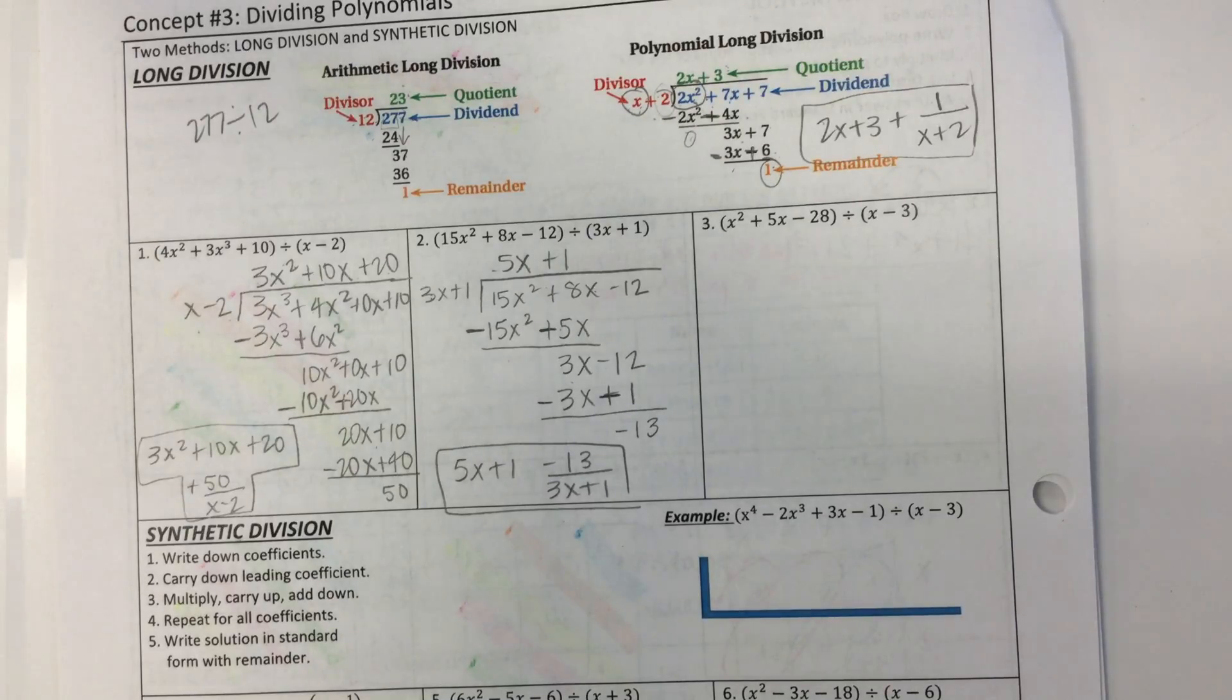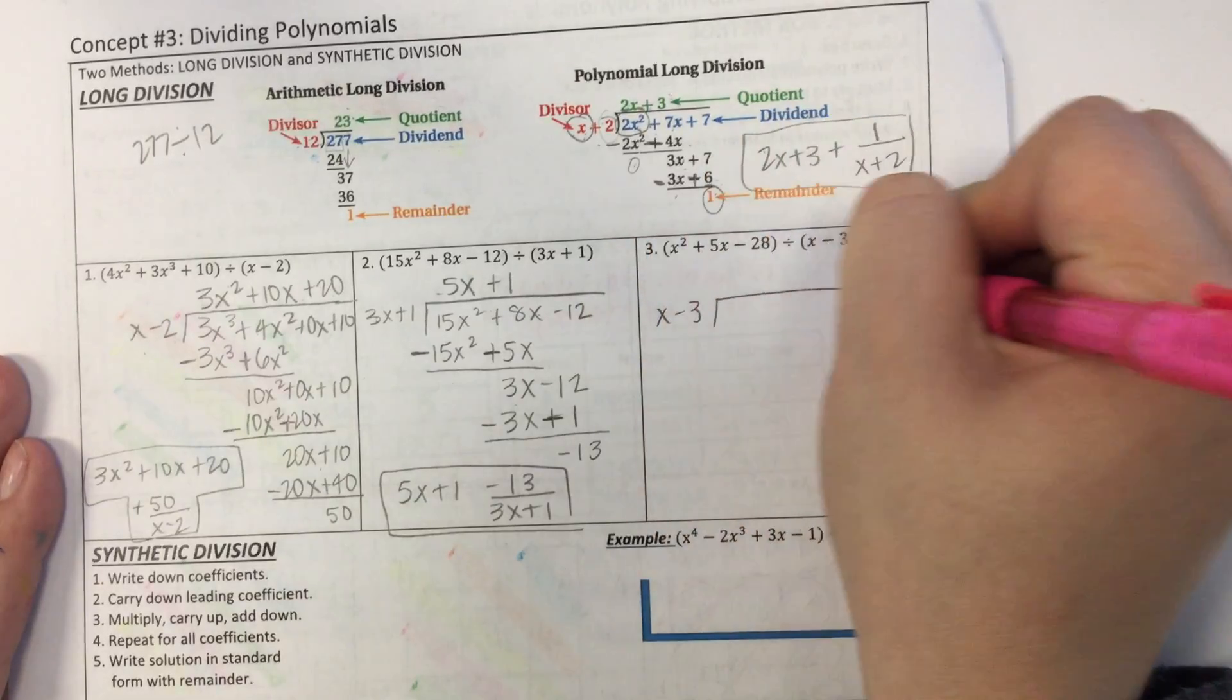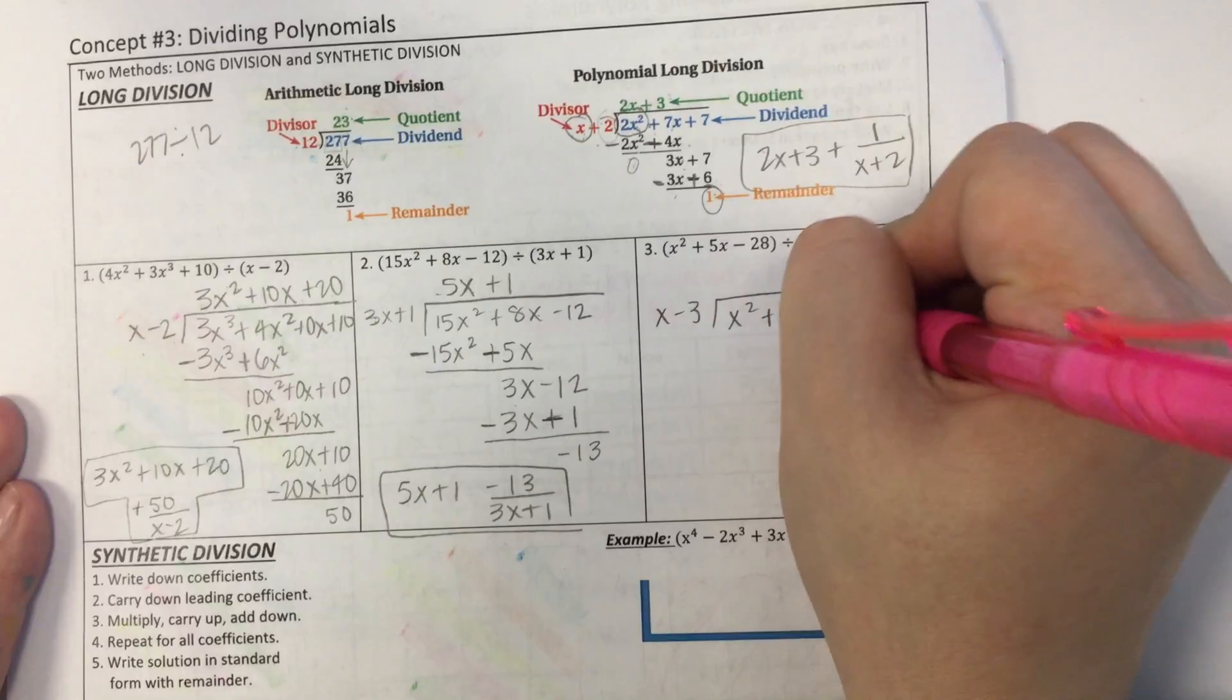Okay, final example number 3. We're going to do the same thing. x minus 3 goes on the outside. x squared plus 5x minus 28.